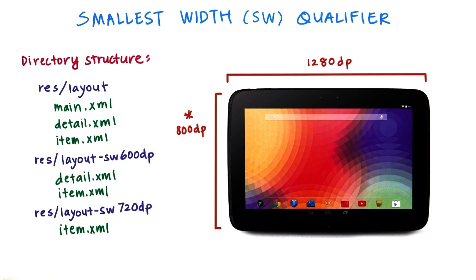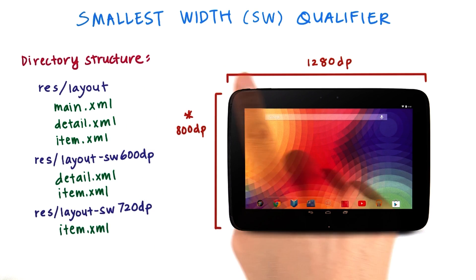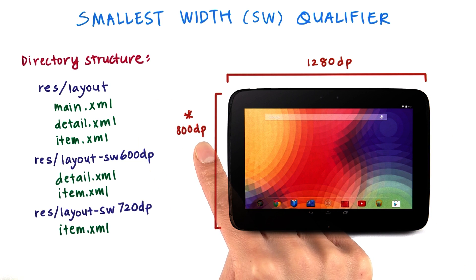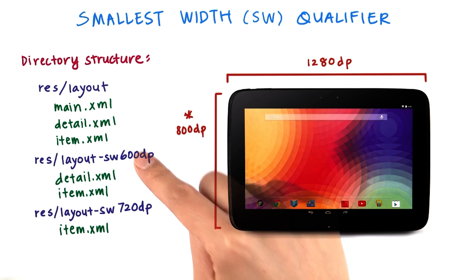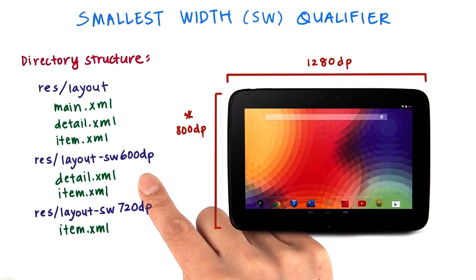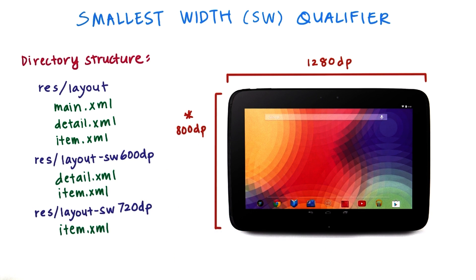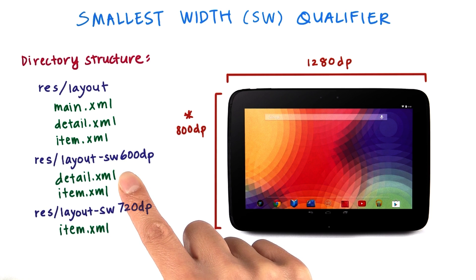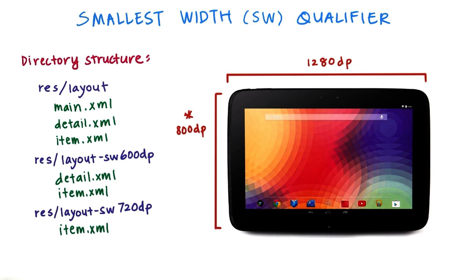For the Nexus 10, the dimensions are 800dp by 1280dp. Of the two sides, 800dp is the smallest width. This device satisfies the categories for all of these folders because 800dp is greater than 720 and greater than 600. However, the system chooses the most specific folder first, so it will choose the item layout from the sw720dp folder. Since the detail layout is not defined there, it falls back to the sw600dp folder. Then for the main.xml file, it's not declared in either of these, so it falls back to the base layout folder.